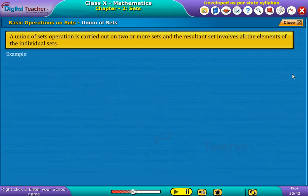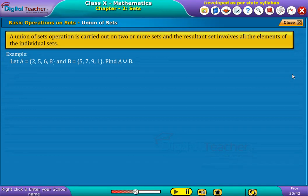Example. Let A is a set of 2, 5, 6, 8 and B is a set of 5, 7, 9, 1. Find A union B.